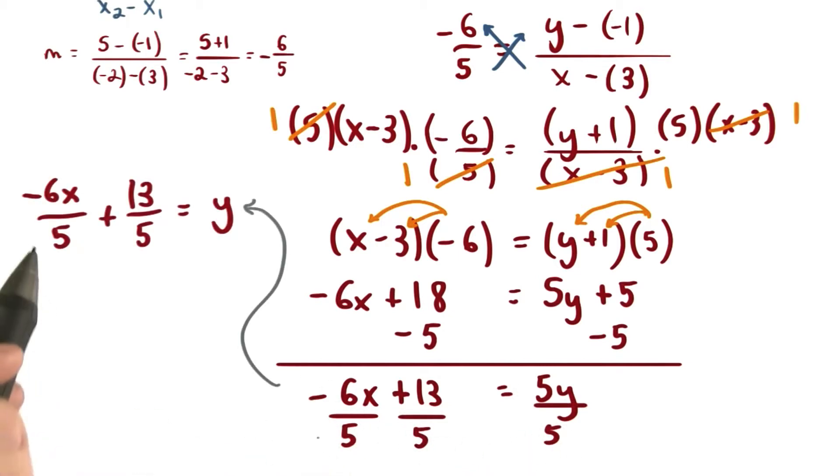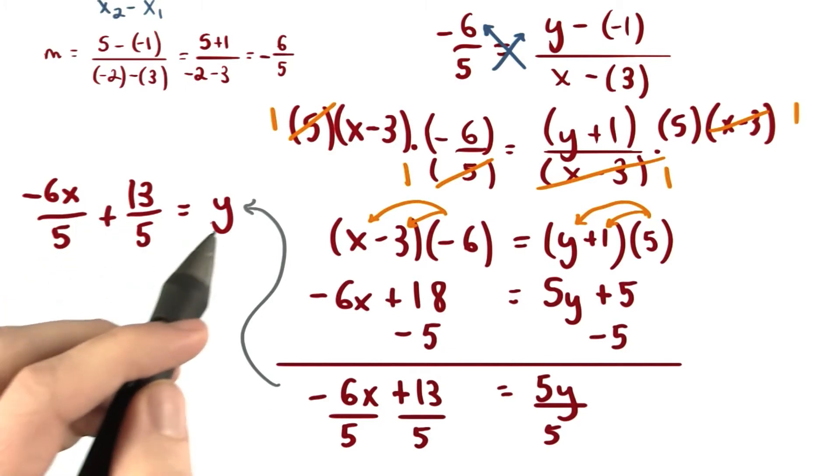So I have negative 6 fifths times x on the left, plus 13 fifths equals 1y. It's probably best to continue solving down the page. I just wanted to show our work all in one place.